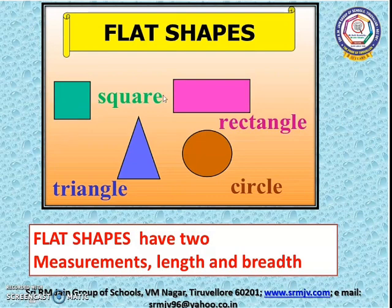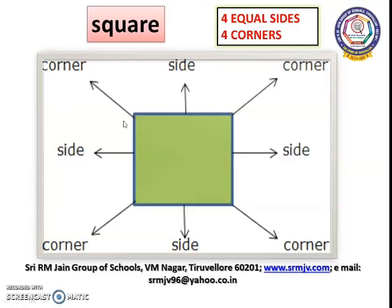Square, rectangle, and triangle have straight sides. Circle has curved sides. This is a square. Square has four sides and four corners. All four sides are equal.